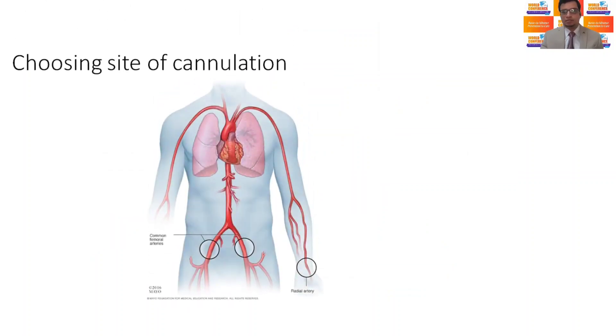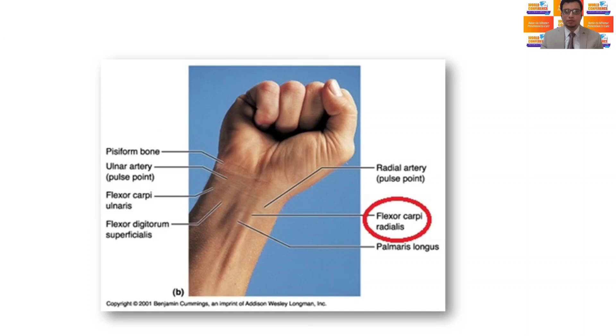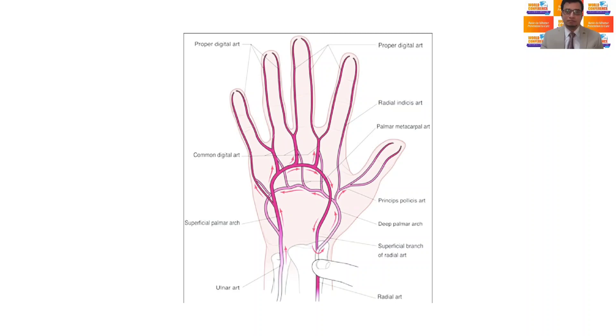Which site is the best for arterial access? Radial, ulnar, brachial, femoral - there are many sites. But the radial artery at the wrist is the most preferred site as the hand has usually good collateral supply and it is easy to access and maintain.